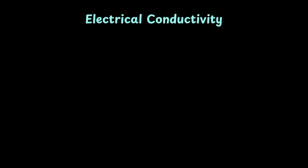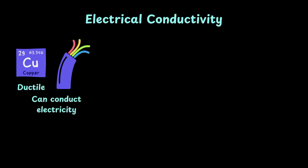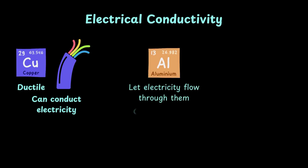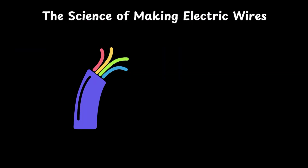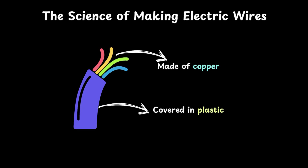Finally, let's look into how these materials conduct electricity. Remember how copper can be made into wires because it's ductile? Well, there's another reason too – it's because copper can conduct electricity. Metals like copper and aluminium let electricity flow through them, and hence they are good conductors of electricity. Non-metals like plastic and rubber, on the other hand, are poor conductors of electricity. That's why wires, although made of copper, are covered in plastic – this prevents us from getting an electric shock even if we touch an electric wire accidentally. So all in all, metals are good conductors of electricity while non-metals are poor conductors.